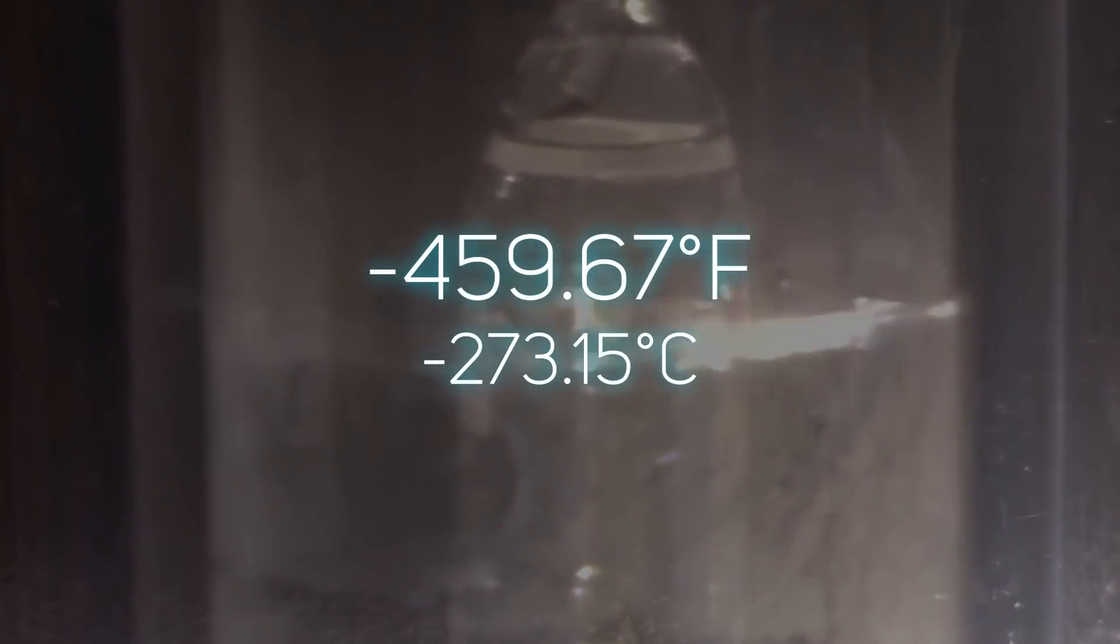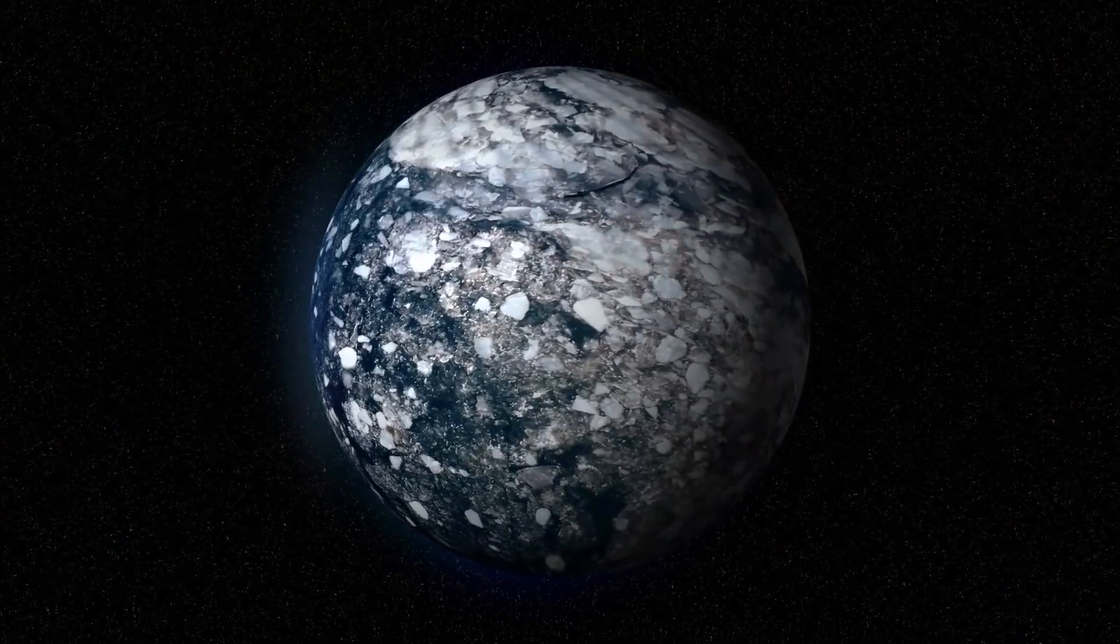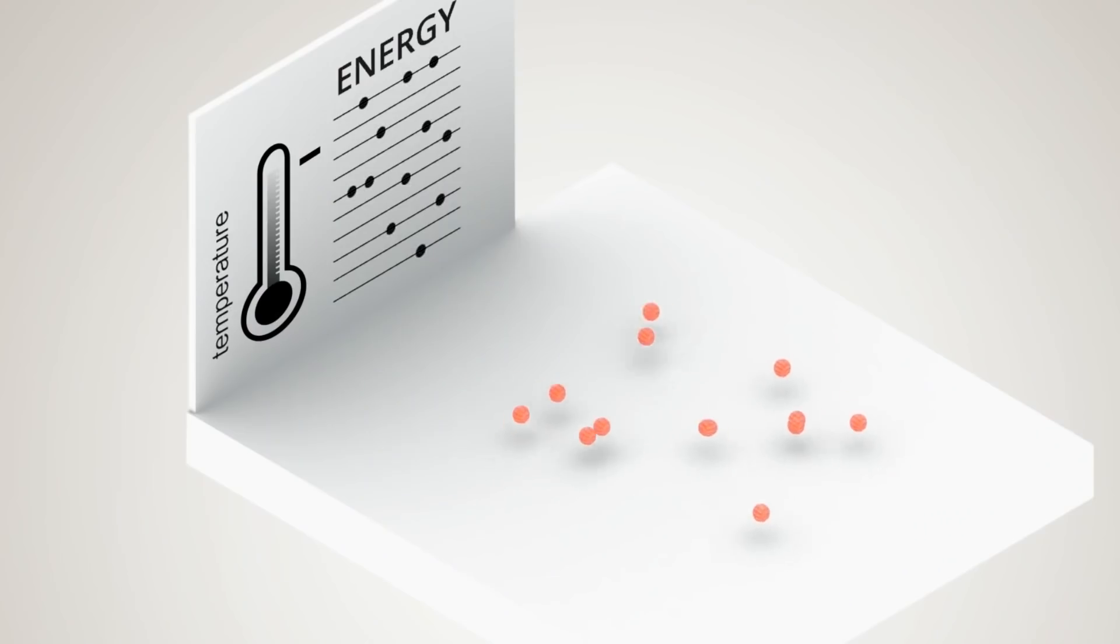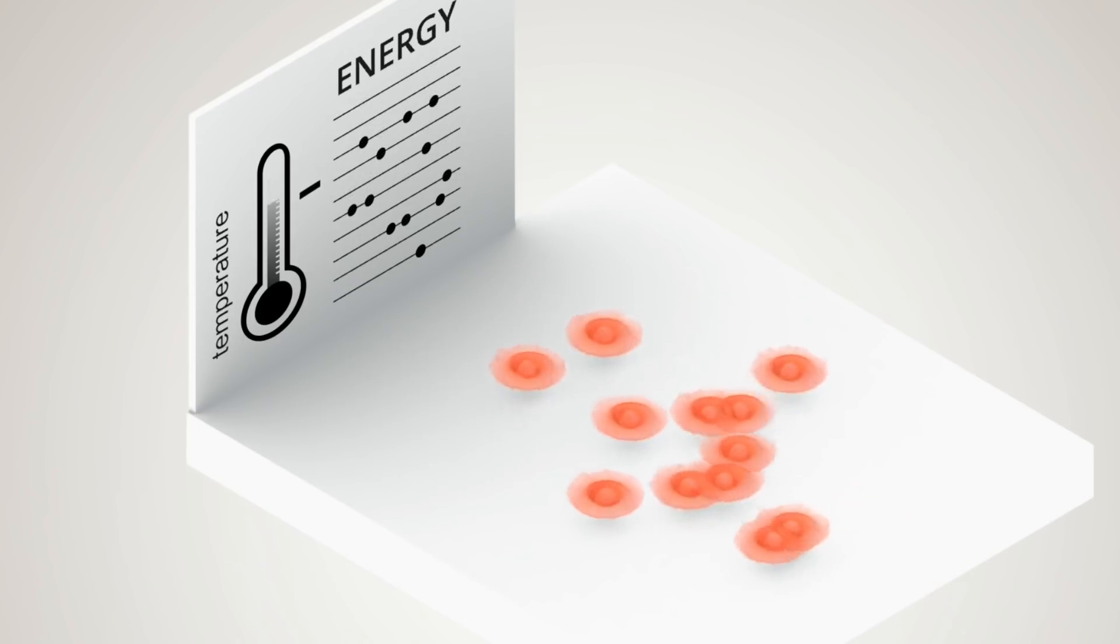The lowest temperature possible is minus 459.67 degrees Fahrenheit. If your local weather forecast ever calls for this temperature, you should probably leave your faucets running. Researchers took what's called a Bose-Einstein condensate, a special state of matter created in 2001 by Nobel Prize in Physics winning researchers Eric A. Cornell, Wolfgang Ketterle, and Carl E. Wieman, and used lasers to cool it to near absolute zero.